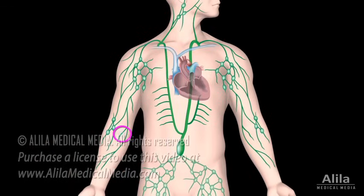Once inside lymphatic vessels, the recovered fluid is called lymph. Lymph flow is enabled by the same forces that facilitate blood flow in the veins. It goes from lymphatic capillaries to larger and larger lymphatic vessels and eventually drains into the bloodstream via the subclavian veins. On the way, it passes through a number of lymph nodes, which serve as filters, cleansing the fluid before it reaches the bloodstream.